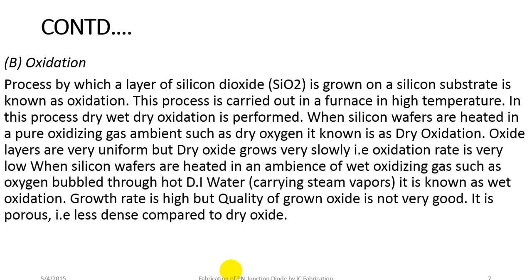In wet oxidation, the silicon wafer is heated in an ambience of wet oxidizing gas, such as oxygen bubbled through hot water or steam vapors. The growth rate is high, but the quality of the wet oxide is not very good — it is more porous and less dense compared to dry oxide.